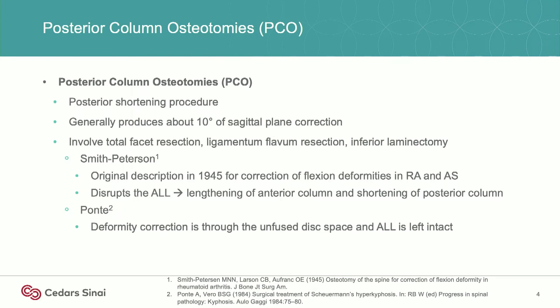In terms of posterior column osteotomies, these are generally a posterior shortening procedure. You can generally produce about 10 degrees of sagittal plane correction. It involves complete removal of the facet, the ligamentum flavum, and the inferior lamina — so as not to cause iatrogenic stenosis when you close it down.